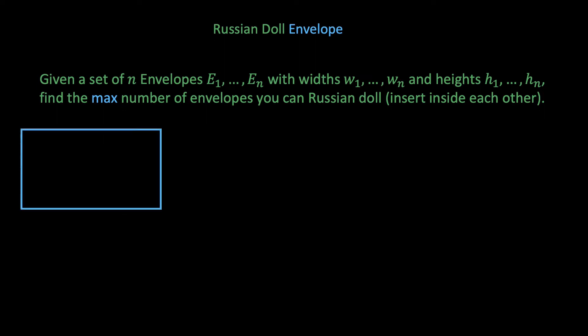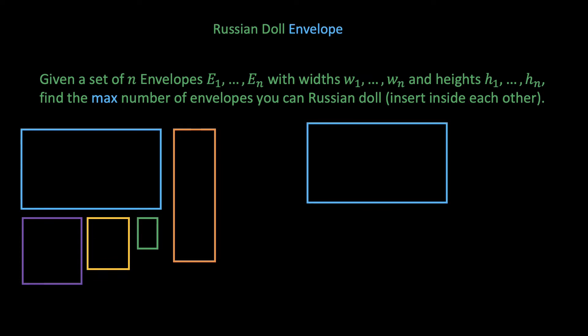For example, suppose we're given the following five envelopes. Then we can Russian doll four of the envelopes as shown to get a chain of four envelopes. Another way to Russian doll two envelopes is also shown. However, the most number of envelopes that we can chain here is four, and so the answer should be four.